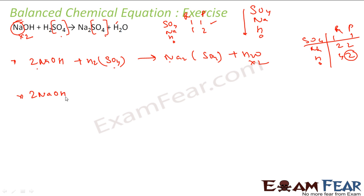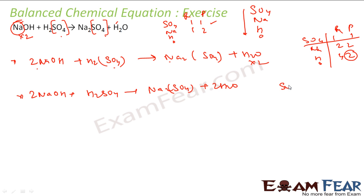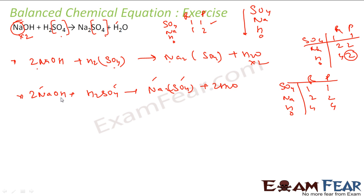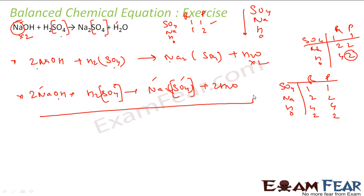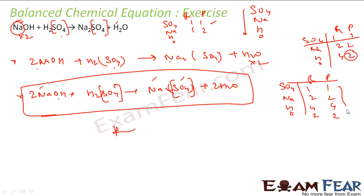So what you get is: 2NaOH + H2SO4 = Na2SO4 + 2H2O. Let's verify. Sulfate: 1 and 1 — balanced. Sodium: 2 and 2 — balanced. Hydrogen: 2 + 2 = 4 here, and 2×2 = 4 here — balanced. Oxygen: we won't count oxygen from SO4 since that is already counted. We only count the 2 oxygen from NaOH — 2 here and 2 from 2H2O here — balanced. This is my balanced chemical equation. Everything is balanced.